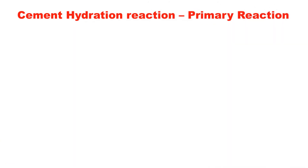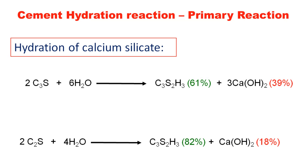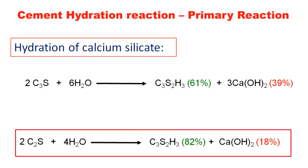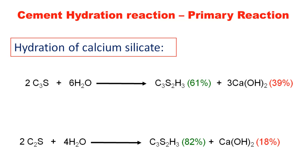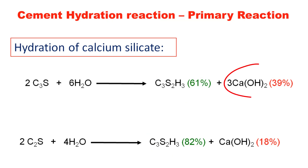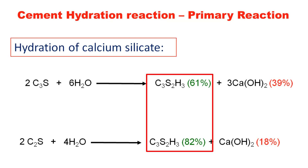Now let's look at the hydration reactions of calcium silicates — tricalcium silicate and dicalcium silicate. When water is added to cement, C3S reacts with water to give CSH gel and calcium hydroxide. Similarly, C2S reacts with water to form calcium silicate hydrate and calcium hydroxide. The hydration products are similar, but the proportions differ: C3S produces less CSH gel but liberates more calcium hydroxide — 39% — compared to 18% in C2S.